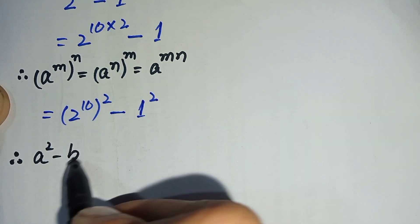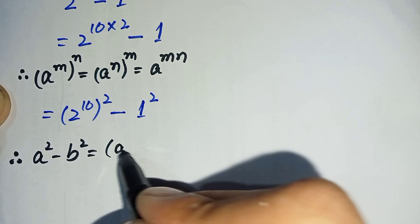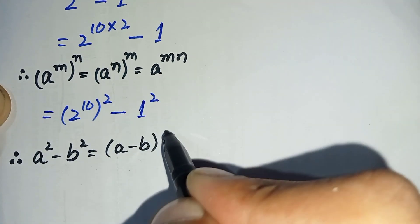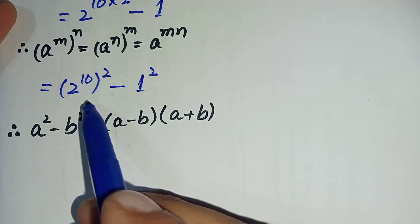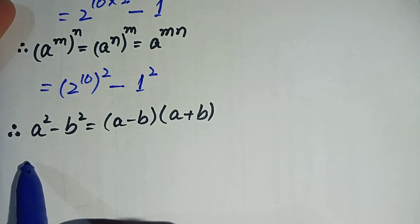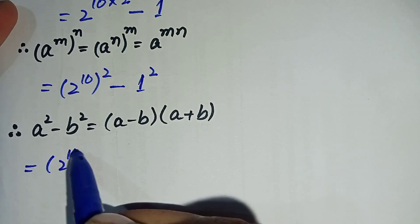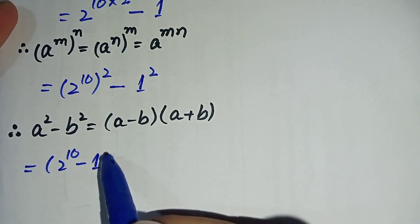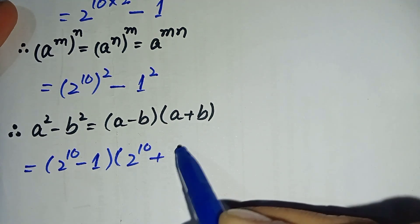The identity is: a^2 - b^2 = (a - b)(a + b). By using this formula, this equation can be written as (2^10 - 1) times (2^10 + 1).